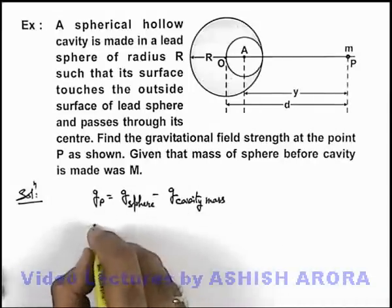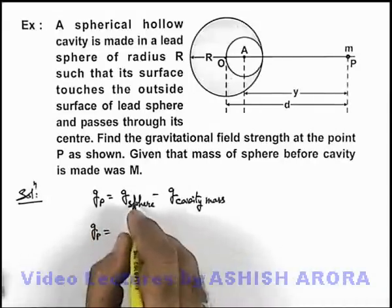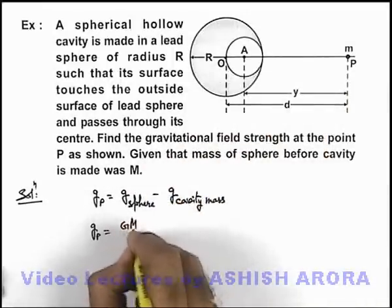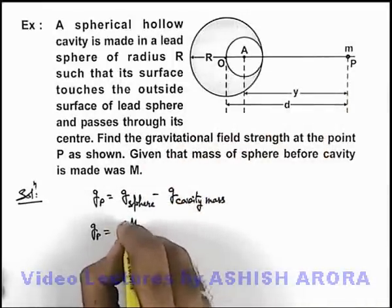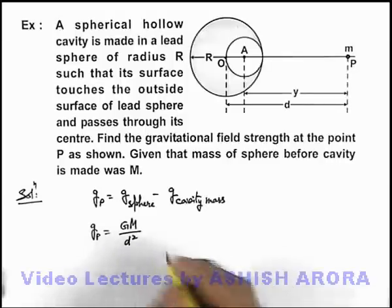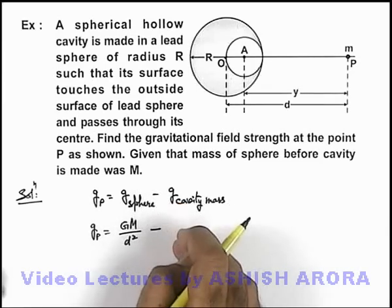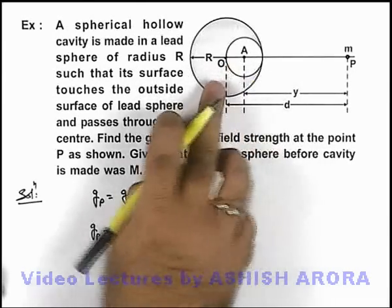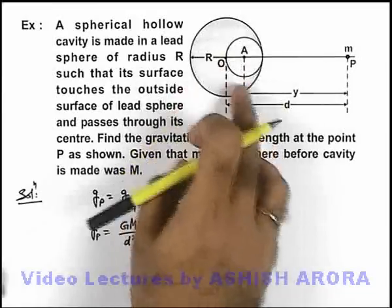If we substitute the value of gravitational field due to the sphere at point P, that can directly be written as GM by d squared. That is the expression for the gravity due to a point mass, minus the gravitational field due to the mass of the cavity.